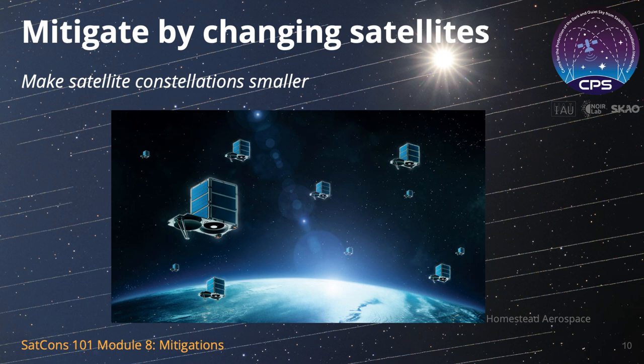Fewer satellites in orbit means fewer objects reflecting sunlight to the ground. One option for reducing satellite impacts on astronomy is to launch fewer of them. Smaller satellite constellations have a long history dating to the 1970s. They are less expensive to build, launch, and operate. Fewer satellites also means fewer opportunities for collisions that generate space debris. A less crowded space environment is arguably more sustainable than one that is very dense with satellites.